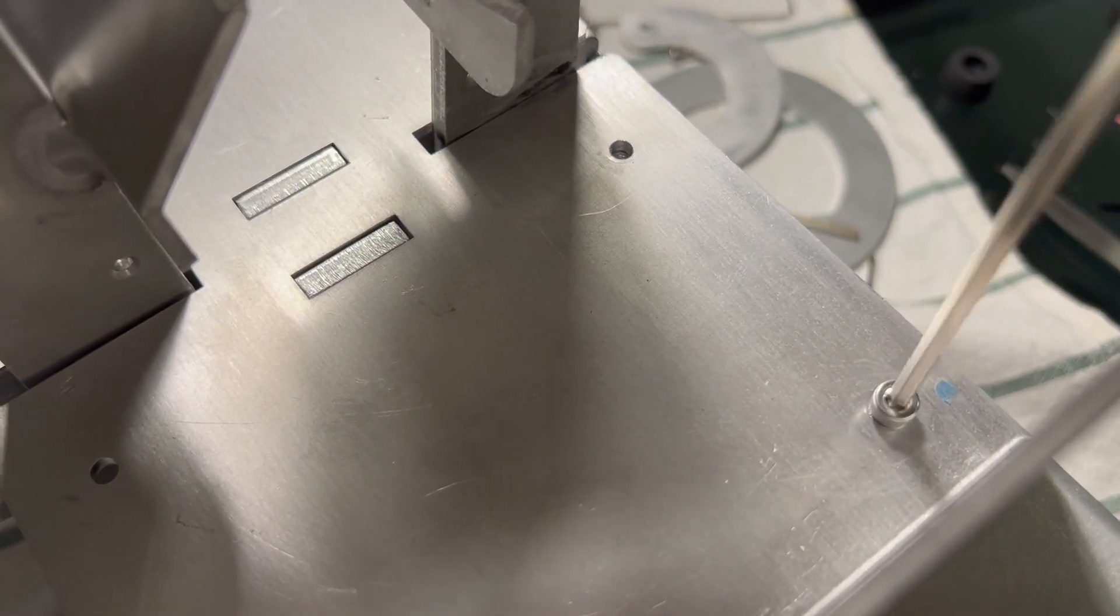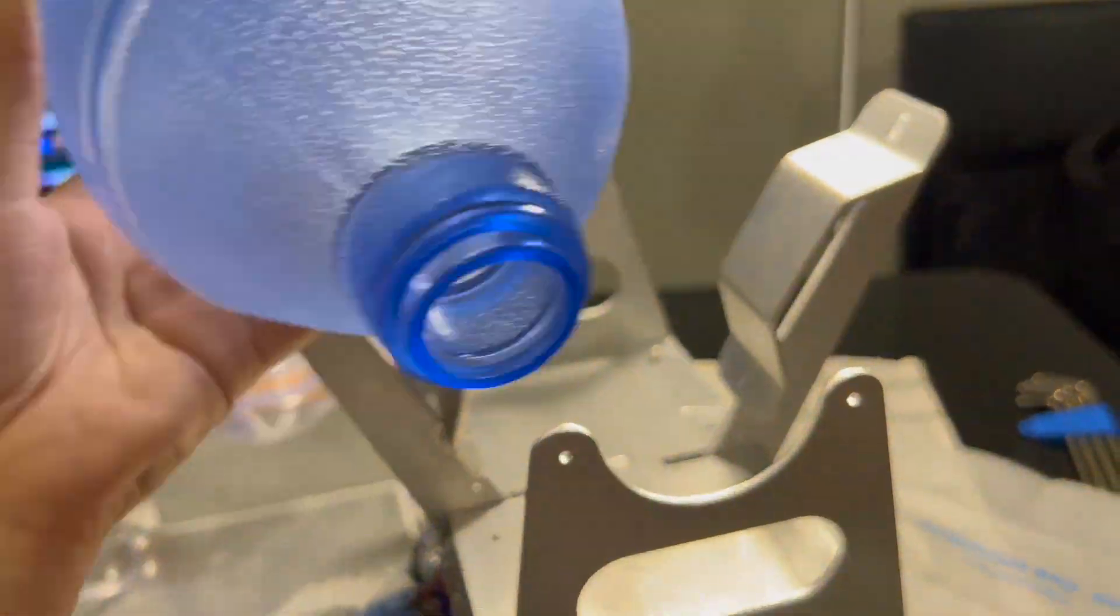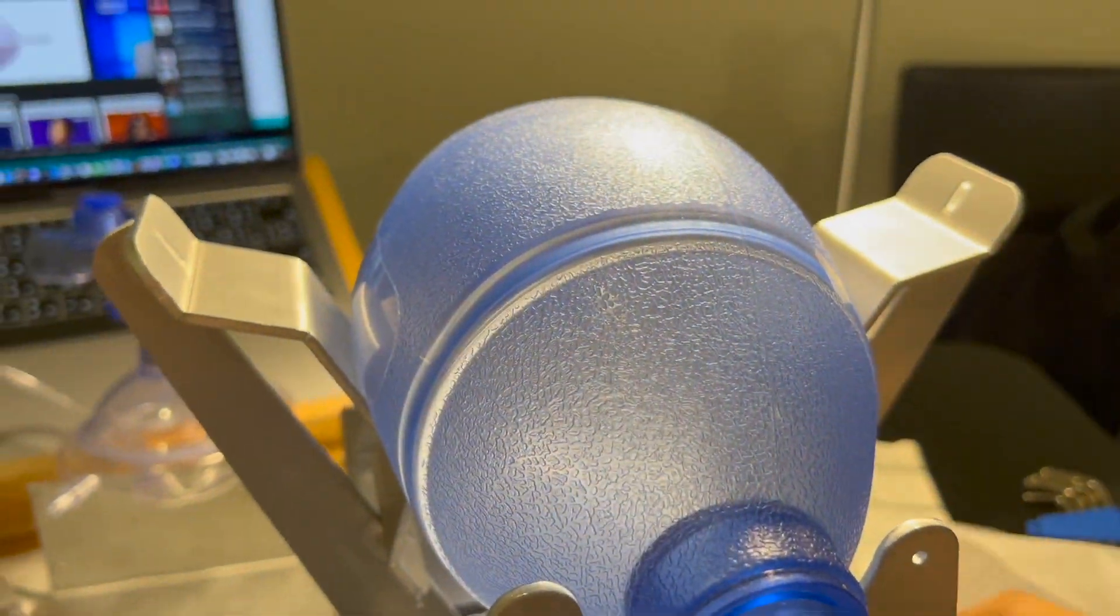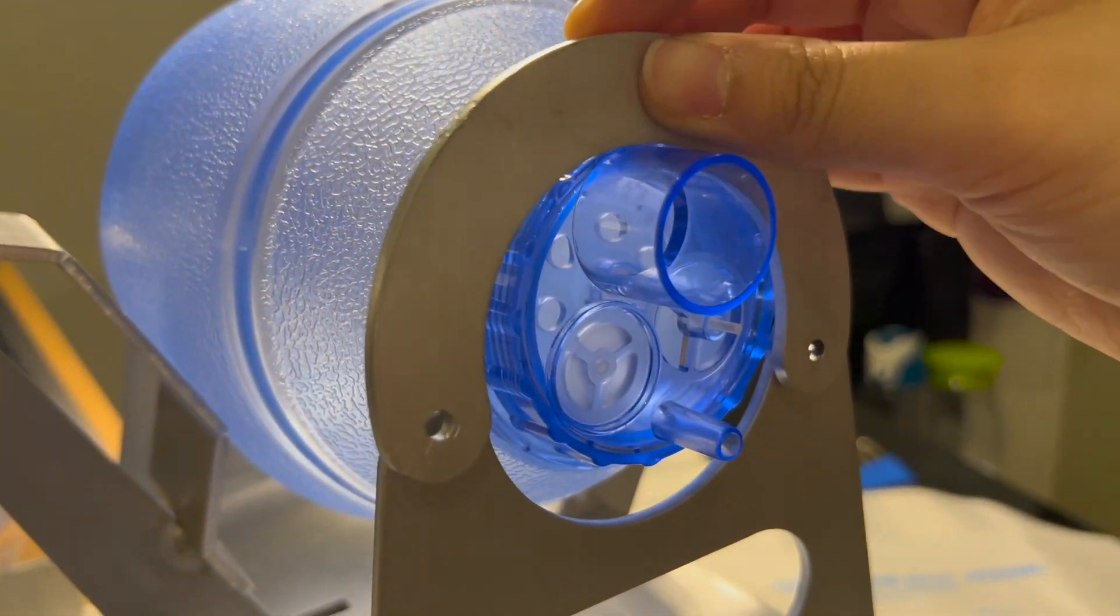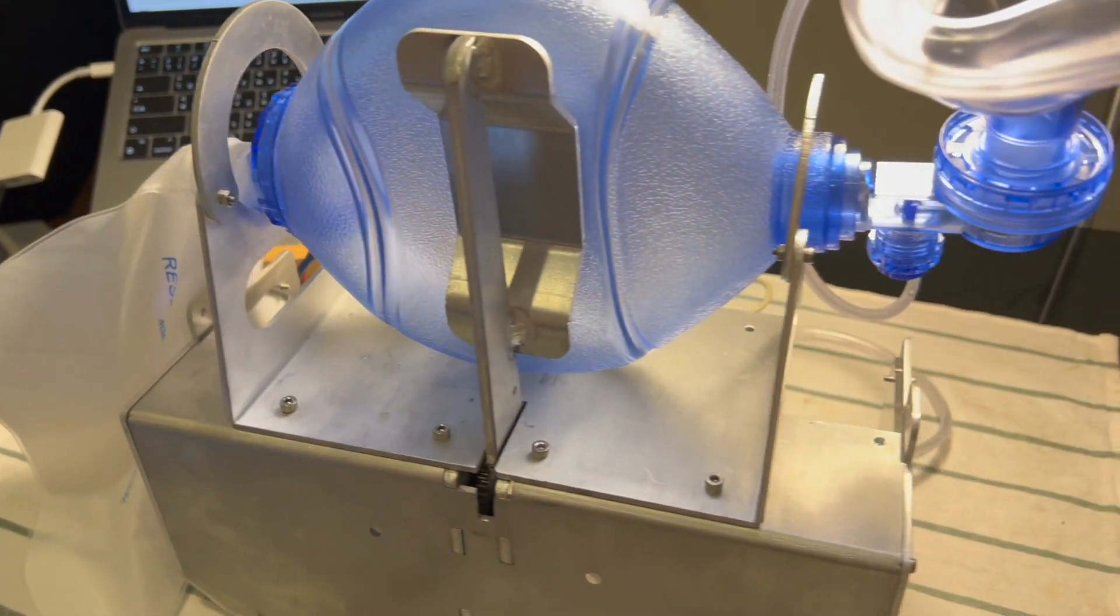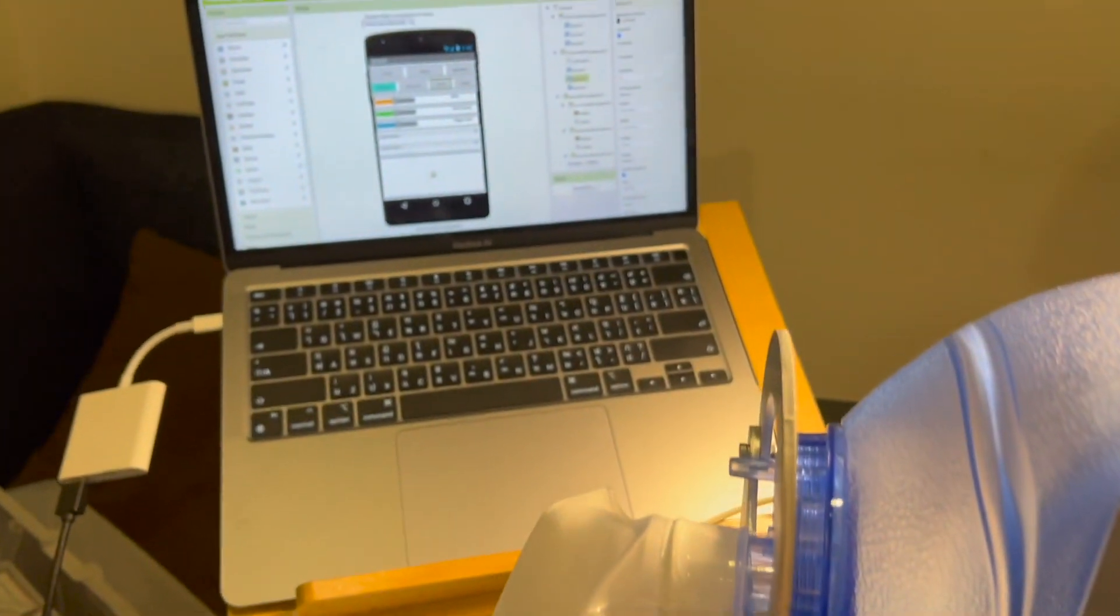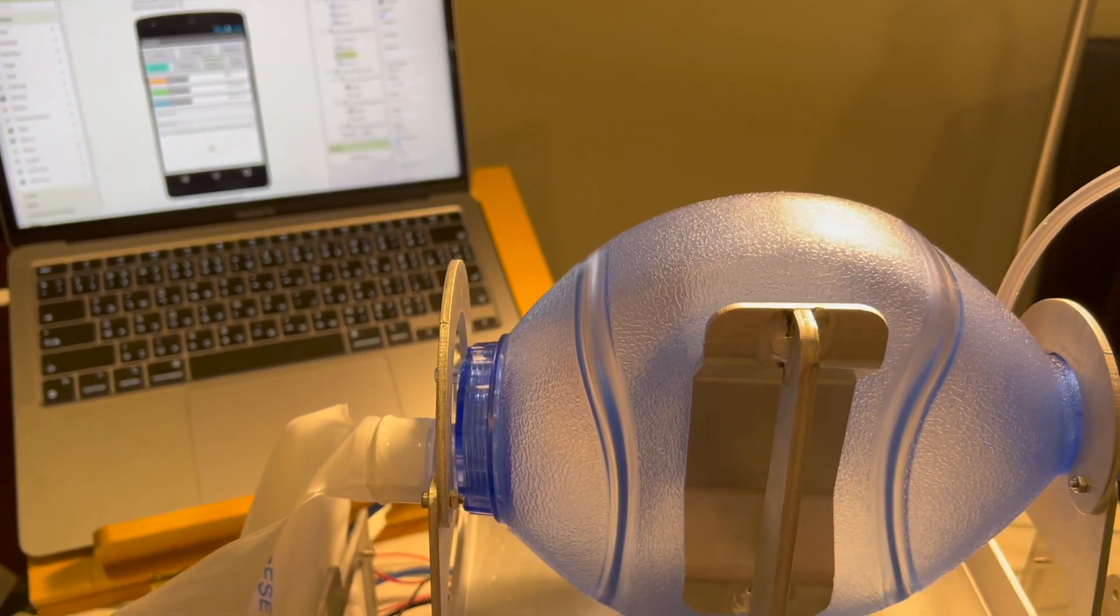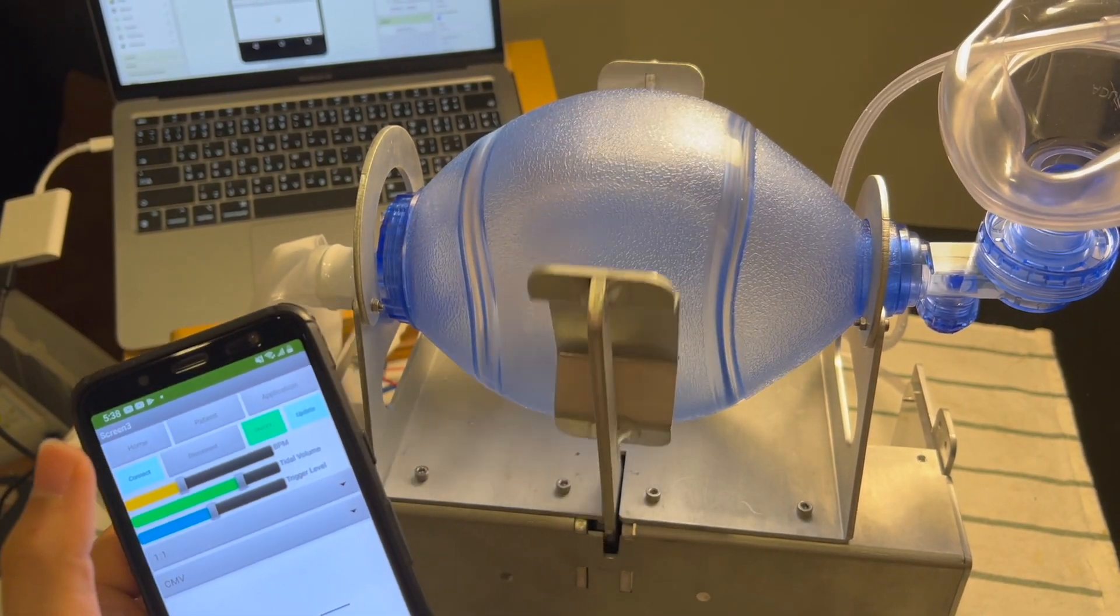Next is the ACV mode or the assist control ventilation. This mode is important for recovering patients who are starting to breathe on their own. In essence, the patient will breathe in naturally while the equipment monitors the breathing cycle. The ventilator will help when the patient is absent from the breathing cycle. And this is the CMV mode.